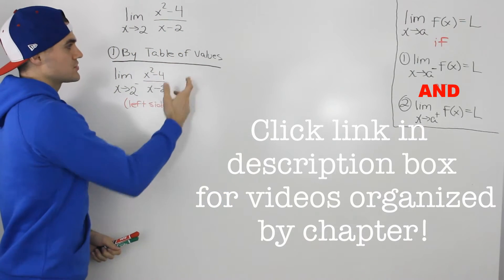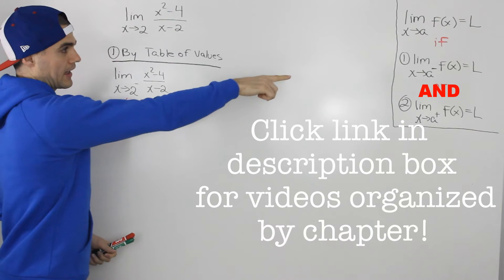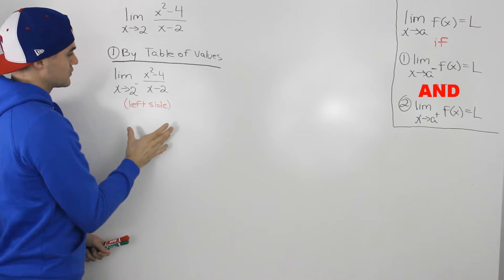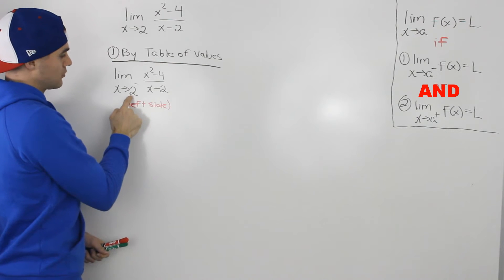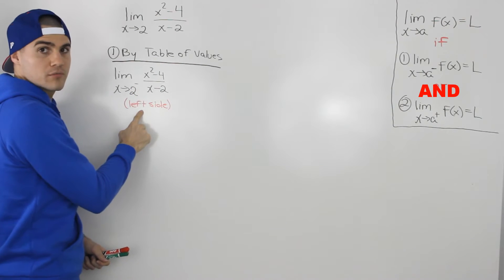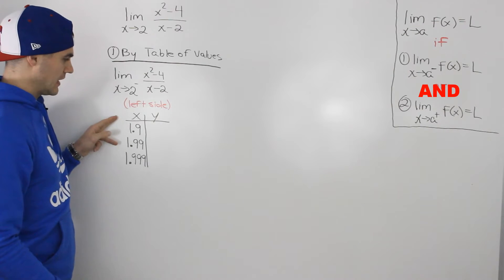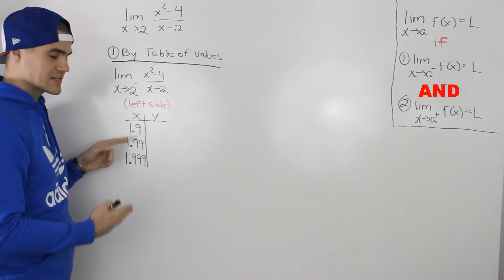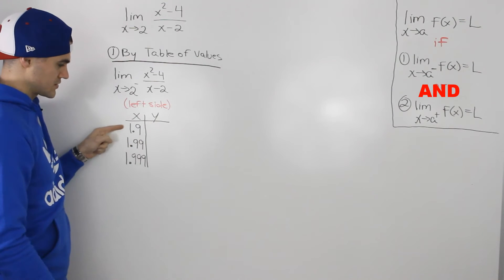I'm going to show you how to solve this limit in a couple of ways. The first way is using a table of values. As we mentioned in the overview video, we have to first find the limit of this function as we approach 2 from the negative side, or from the left side. If we're approaching 2 from the left side, we can make a table of values with x values that are very close to 2 from the left side.